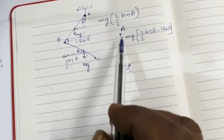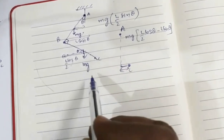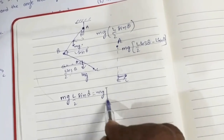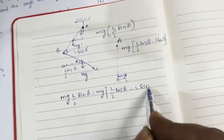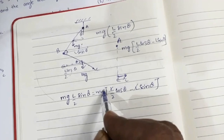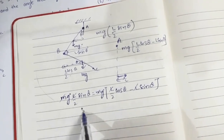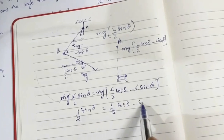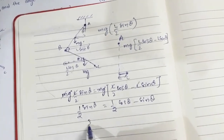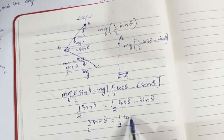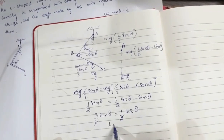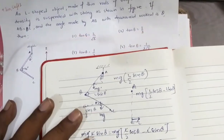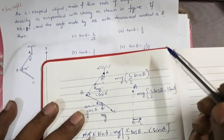Equating the two torques: Mg × (L/2) sin theta = Mg × (L/2 cos theta − L sin theta). L and Mg cancel out, giving (1/2) sin theta = (1/2) cos theta − sin theta. Bringing sin theta to the left: (3/2) sin theta = (1/2) cos theta. The 2s cancel, so tan theta = 1/3. This is the correct answer — option 2.